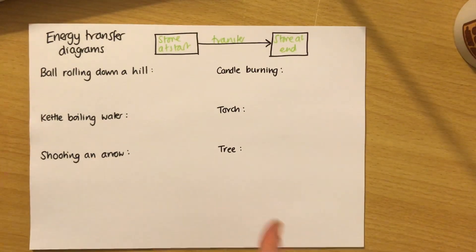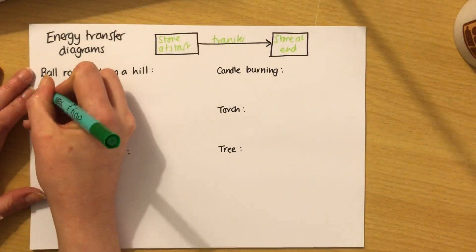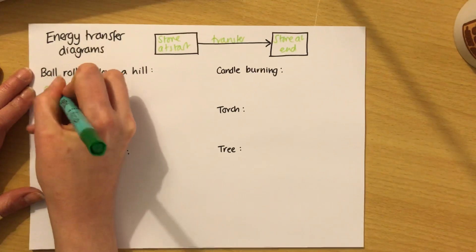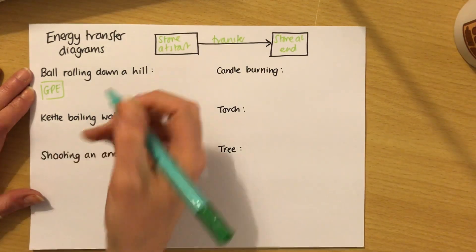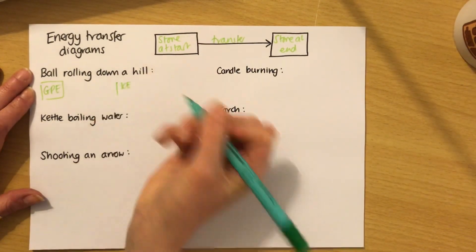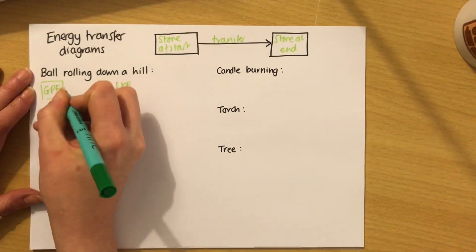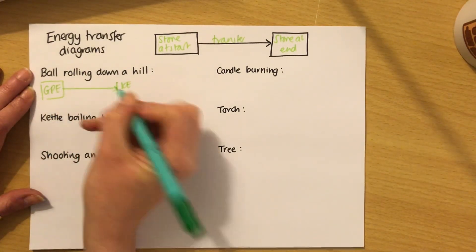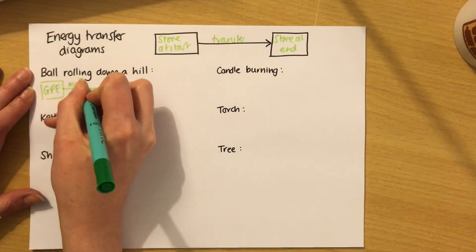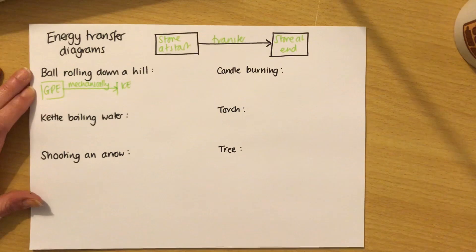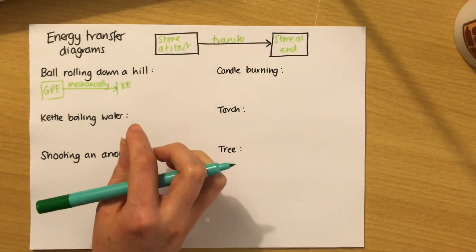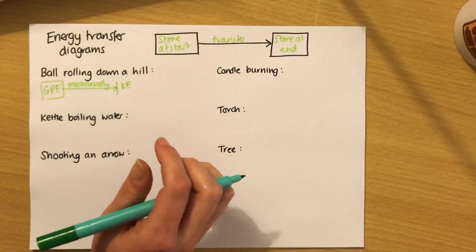So we're going to think about a ball rolling down a hill. When a ball is up a hill, it's at a height, it can fall. So it starts off with GPE, gravitational potential energy. When it rolls down the hill, it's moving. So that GPE has become kinetic energy. It's done that because it's moved. If it's moved, that means we can write mechanically or by forces on the arrow. In a perfect world, this is what we just write.